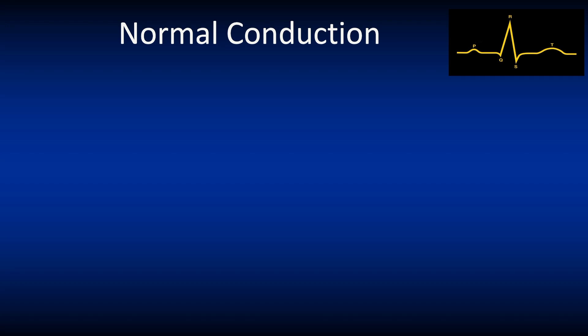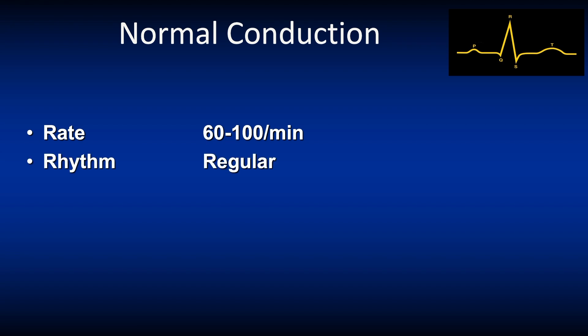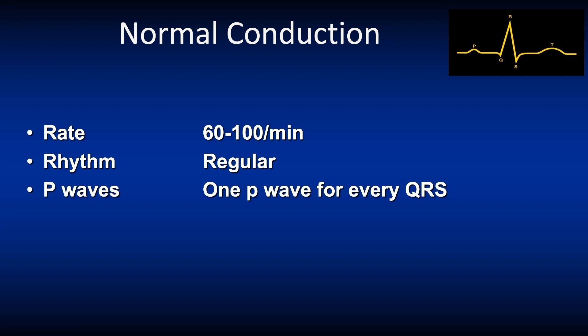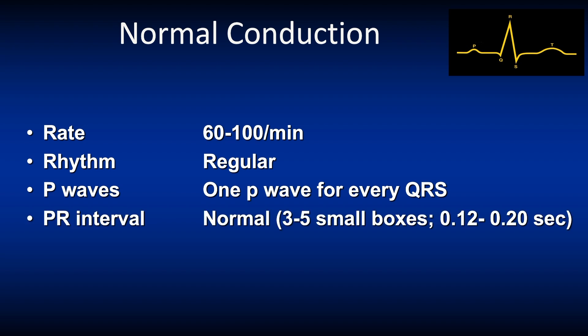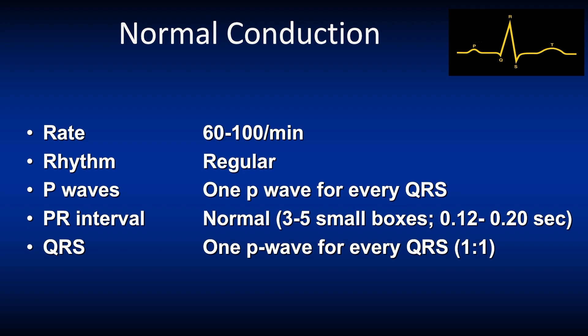Let's look at what normal conduction looks like on an ECG. The rate is usually 60 to 100 per minute, which is normal. The rhythm is regular. P waves are present and there is one P wave for every QRS. The PR interval is within normal range, meaning three to five small boxes or 0.12 to 0.2 seconds. The QRS complex is narrow, meaning three small boxes or less, or less than 0.12 seconds, and there is one QRS for every P wave, meaning one-to-one conduction.